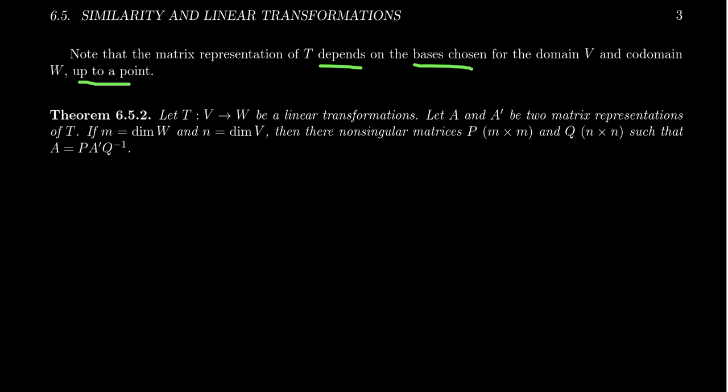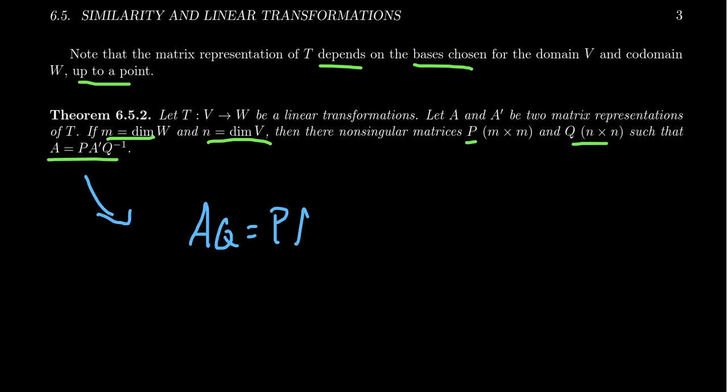Imagine we have a linear transformation T which goes from V to W, and we have two different matrix representations, A and A prime — two different representations of the same linear transformation T. Let's assume that W is M-dimensional and V is N-dimensional. Then there's going to exist an M by N non-singular matrix P and an N by N non-singular matrix Q, such that A equals P times A prime times Q inverse. So there's some way of factoring one matrix representation into the other using these non-singular matrices. Since this is non-singular, you could rewrite this as AQ equals P A prime.